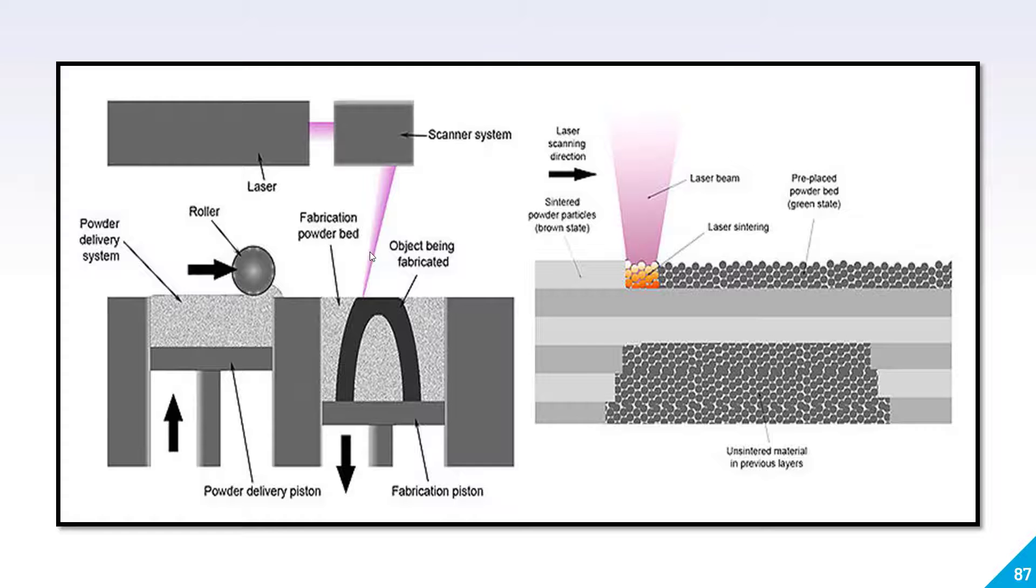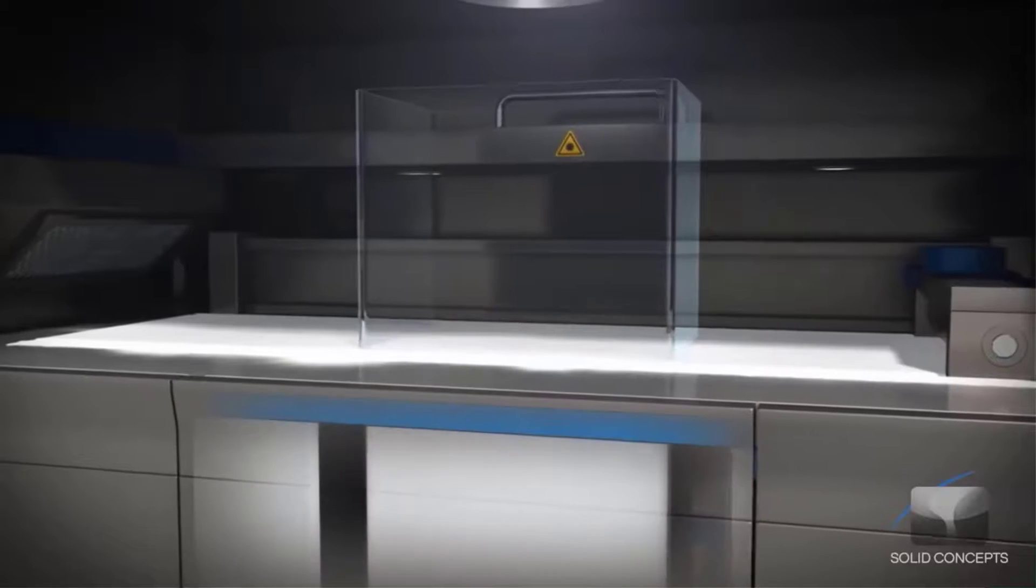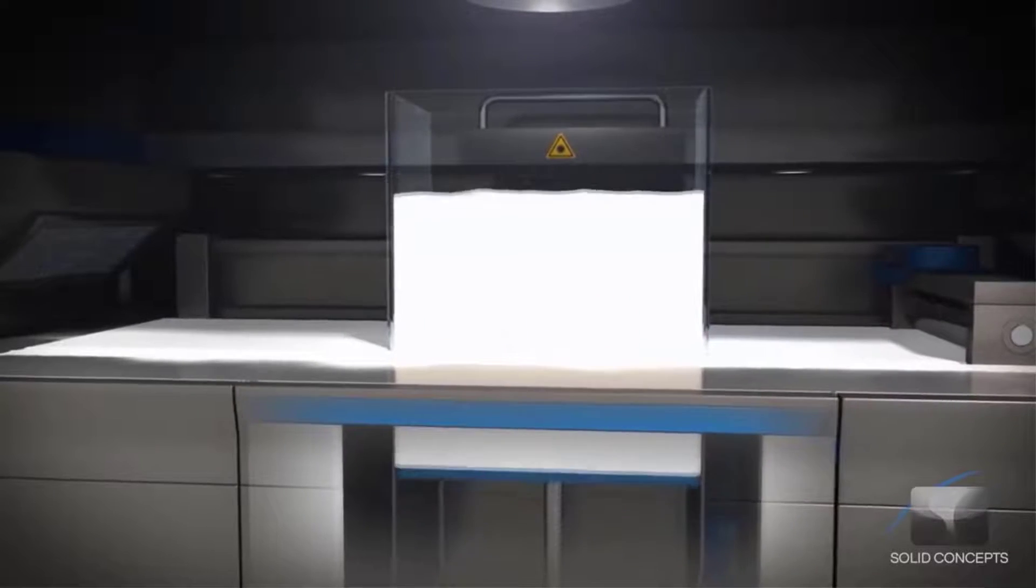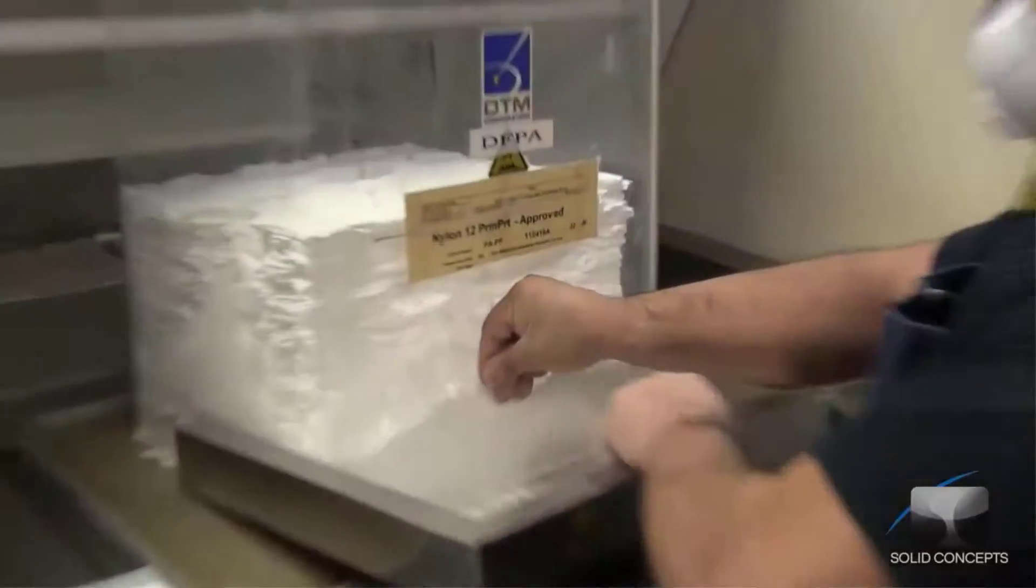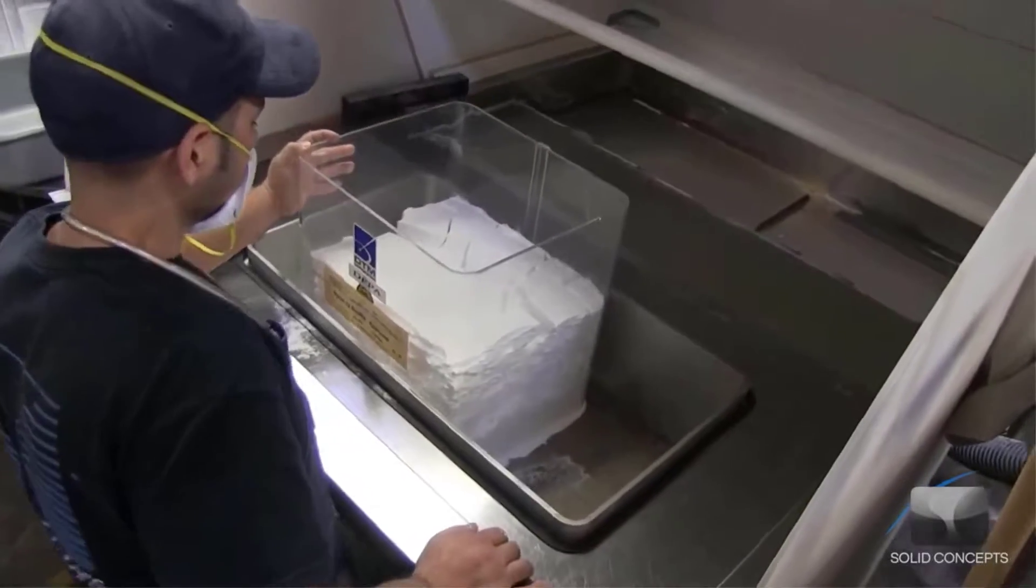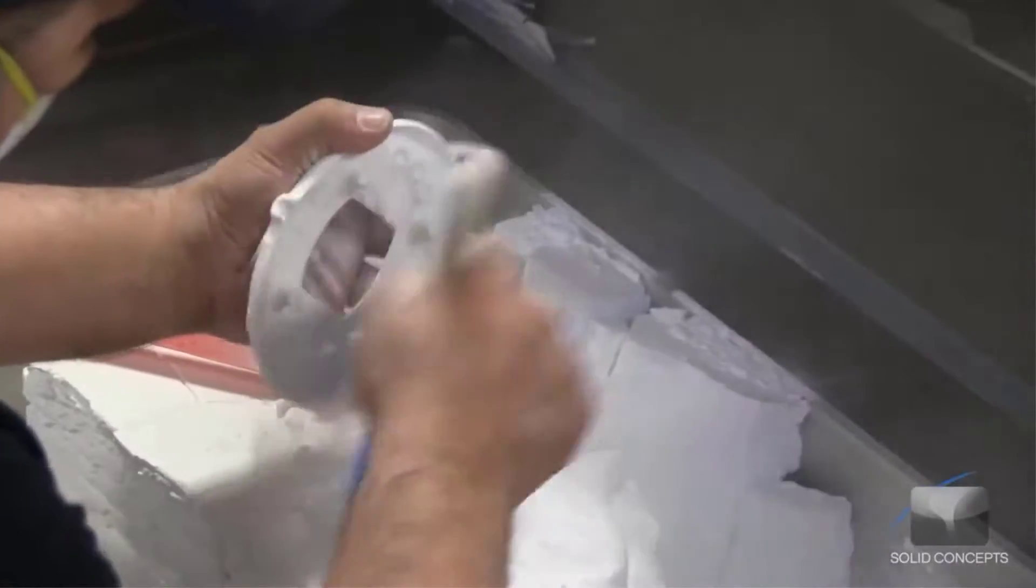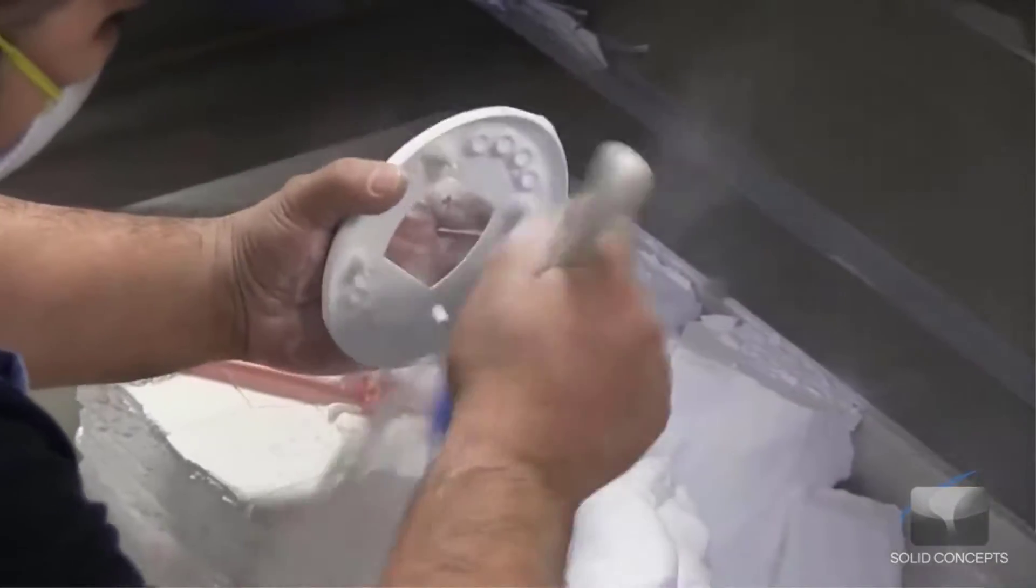As you can see in this animation, how products are created in SLS printing. Once it has been created, you can remove the extra powders and remove your component. The best part of this is that you can reuse this unused powder for making your components. I hope you got a fair idea about how selective laser sintering works.